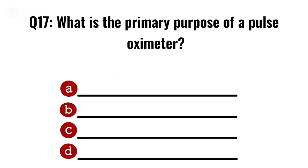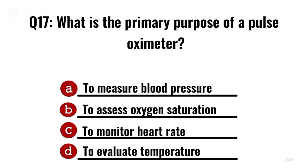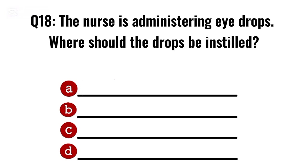Question 17. What is the primary purpose of a pulse oximeter? Correct option B: To assess oxygen saturation.